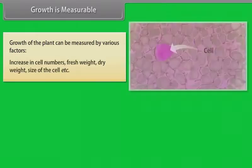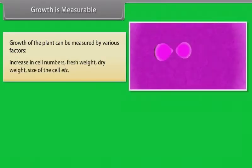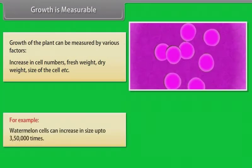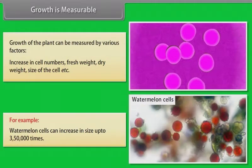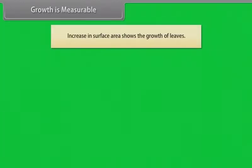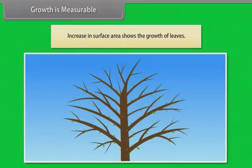Growth is measurable. Growth of the plants can be measured by various factors. Increase in cell numbers, fresh weight, dry weight, size of the cell etc. For example, watermelon cells can increase in size up to 350,000 times. Increase in surface area shows the growth of leaves.